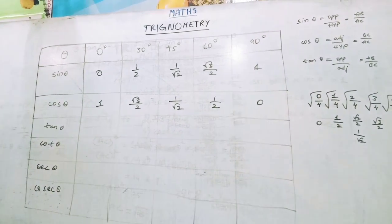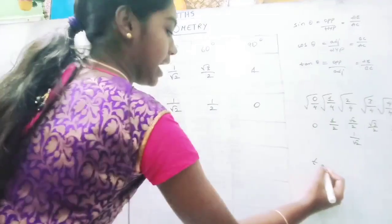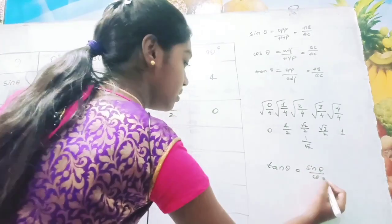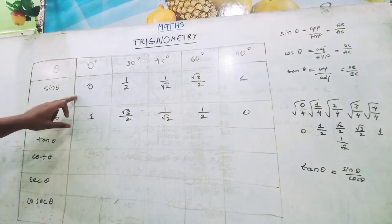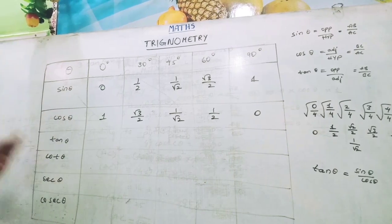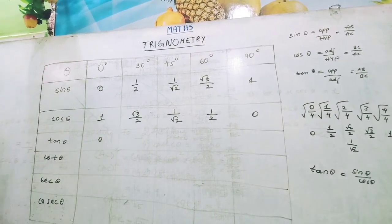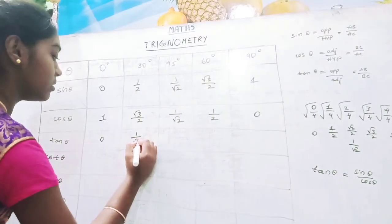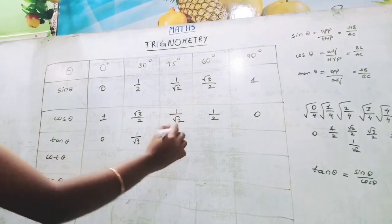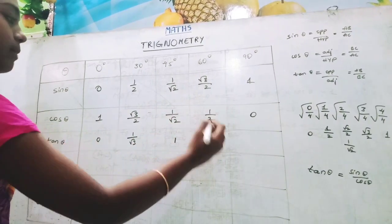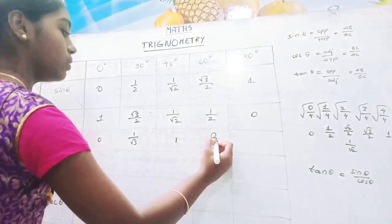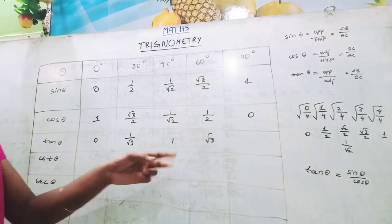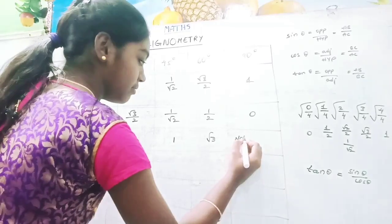For tan theta, we write tan theta as sin theta by cos theta. So tan 0° = 0 by 1 = 0, tan 30° = (1/2) ÷ (√3/2) = 1/√3, tan 45° = 1, tan 60° = √3, and tan 90° = 1 by 0, which is not defined.